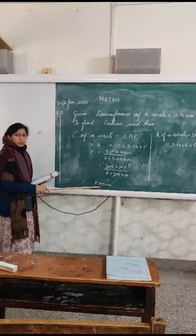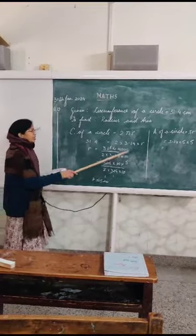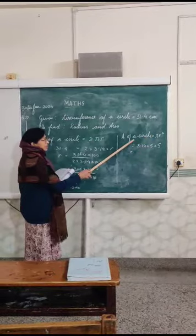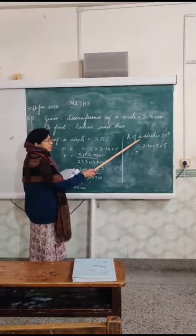Now, once you know the radius is 5 cm, you put the value of radius and pi in the formula for area of a circle.